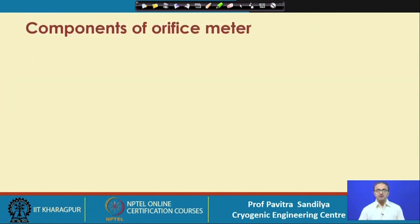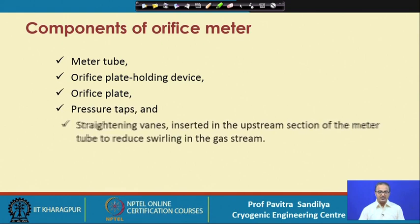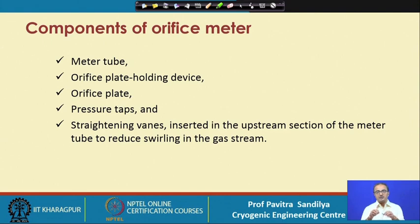The various components of the orifice meter are: the meter tube, the orifice plate holding device, the orifice plate, pressure taps, and the straightening vanes. These straightening vanes are inserted on the upstream side of the meter to reduce the swirling action in the gas stream, because swirls cause a lot of energy loss.